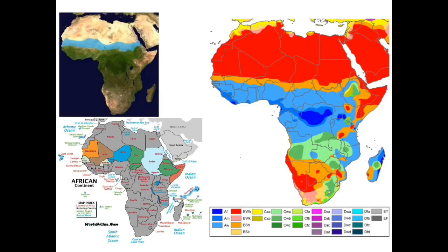Stretching across the widest part of Africa on the southern edge of the Sahara Desert is the African Transition Zone. This zone is also known as the Sahel, which means border or margin, and includes countries such as Mauritania, Mali, Niger, Chad, Sudan, Ethiopia, and Somalia.